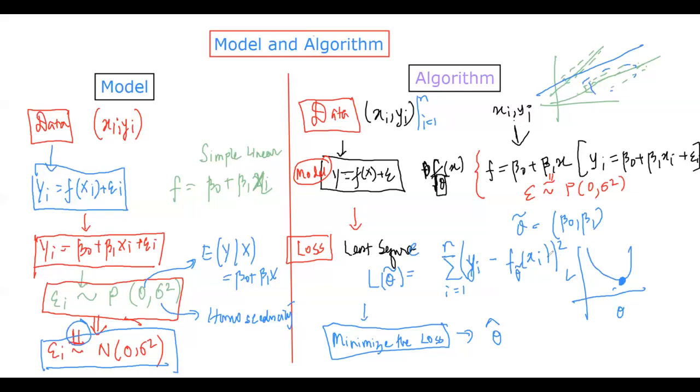For there, what we do is we have to minimize, there's an algorithm to minimize the loss. Let's stop it for a different video. Here we minimize the loss by the least square method. And what we get out of this least square, we get the following: argmin of theta of L theta for which we get the minimum loss function. That's it. So this is the basic model and the algorithm of the simple linear regression.